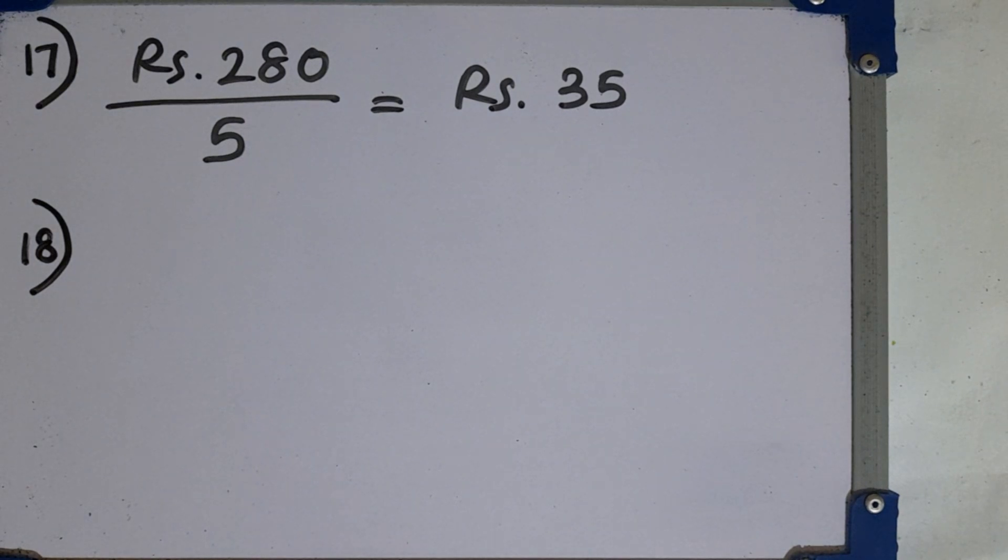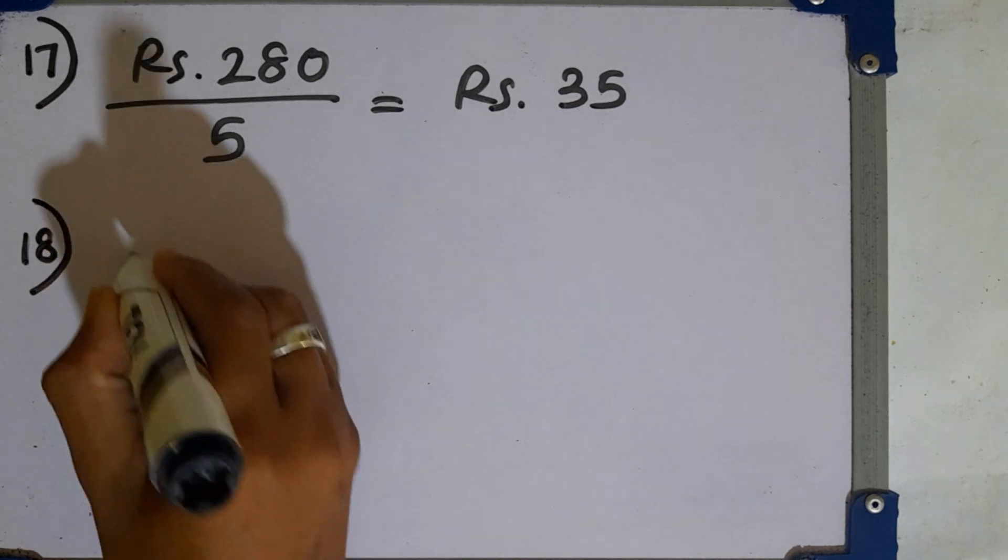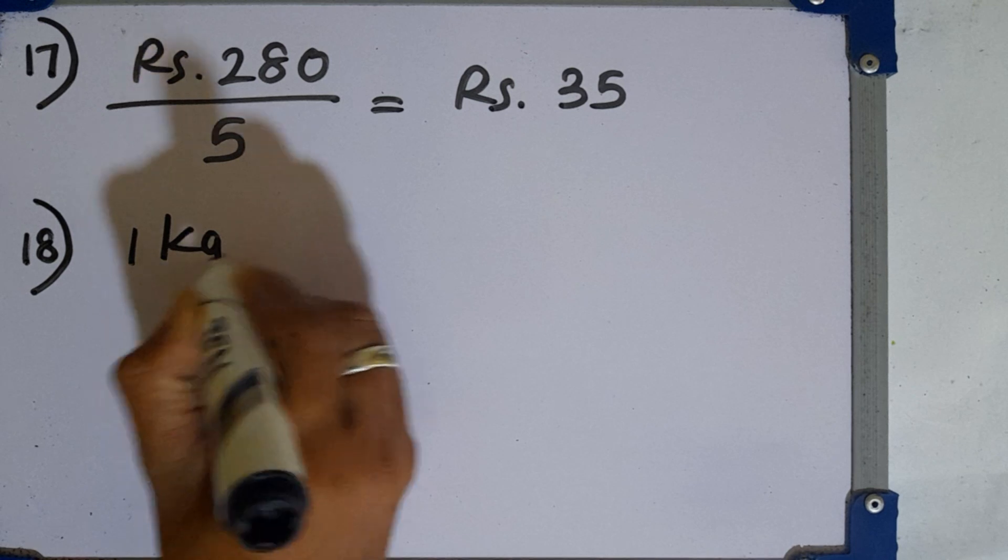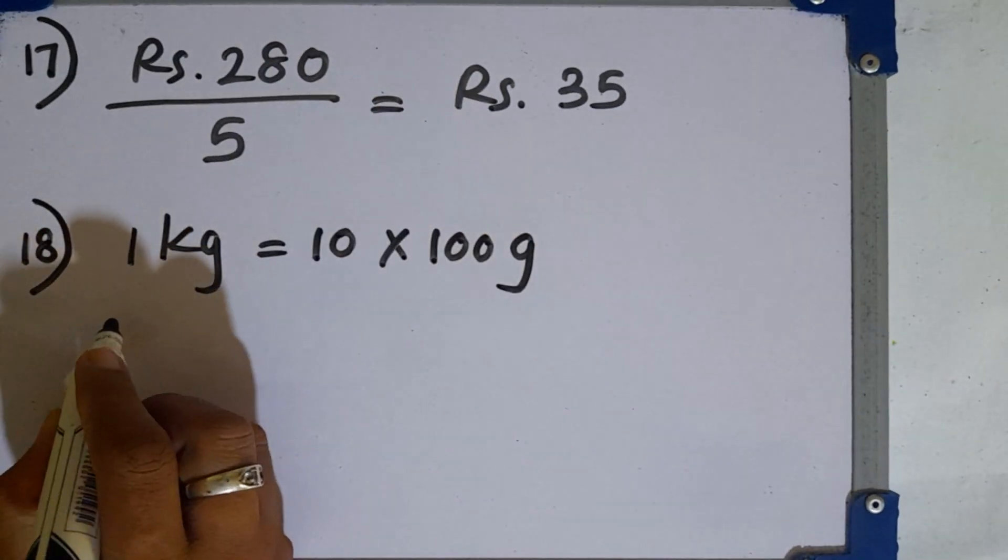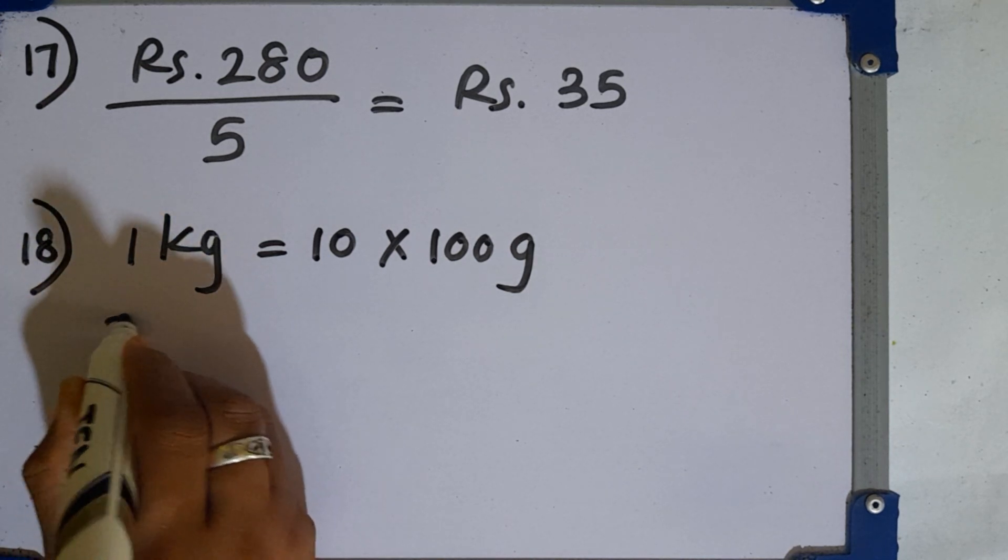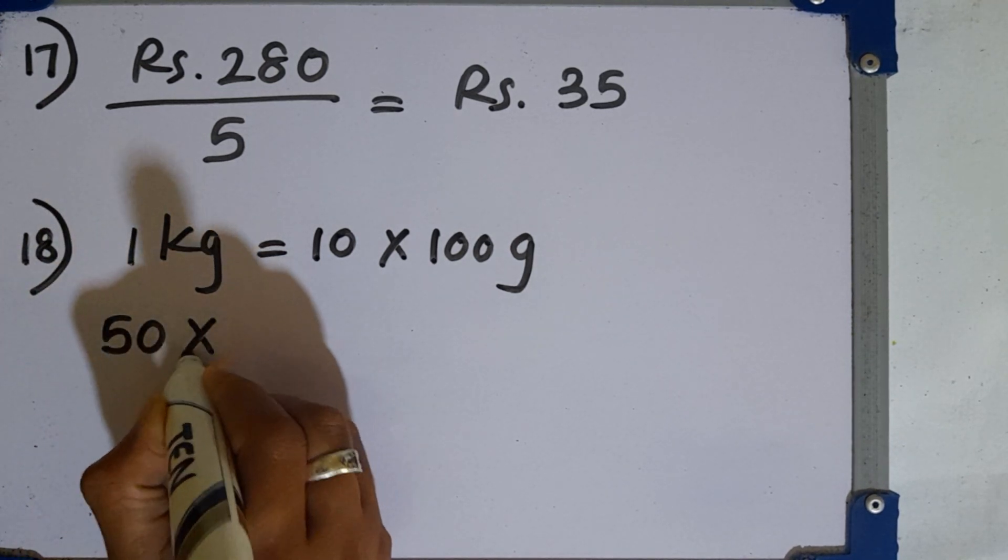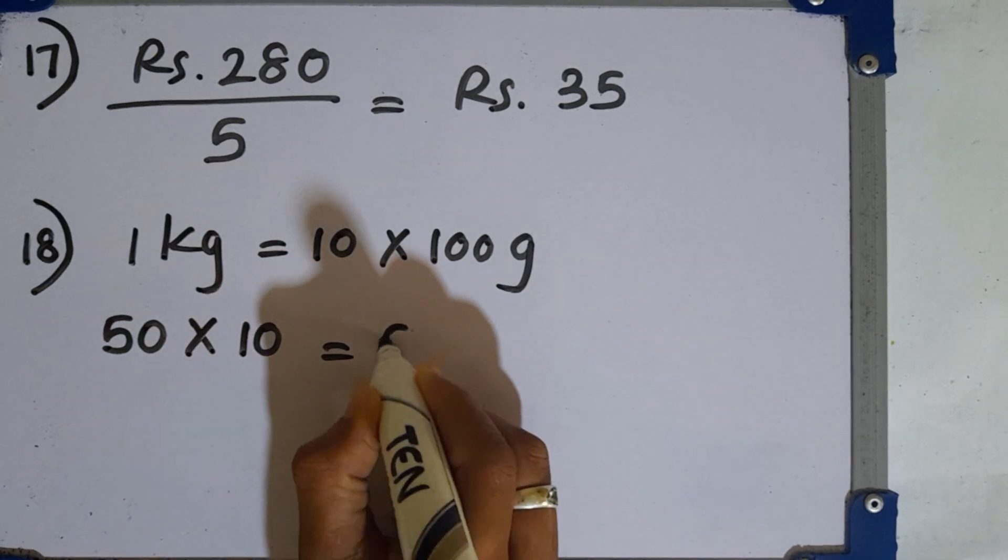Question number 18. There are about 50 peas in 100 grams. Estimate the number of peas in 1 kilogram. In 1 kilogram there are 10 hundred grams. So we can estimate the value by multiplying 50 peas by 10 that is 500.